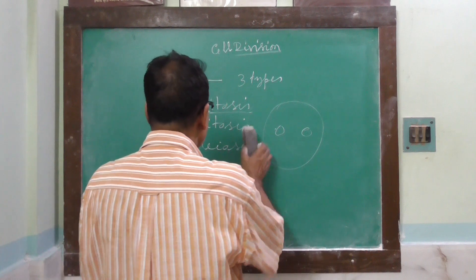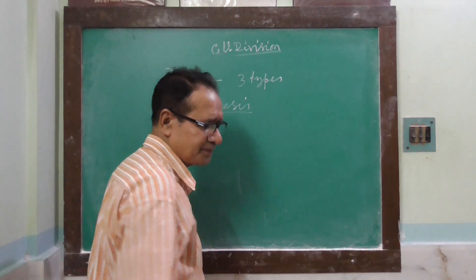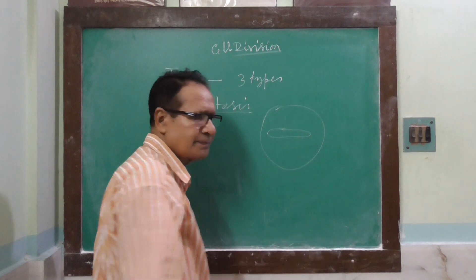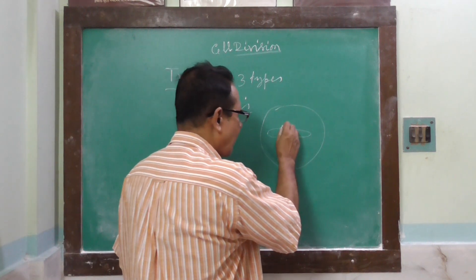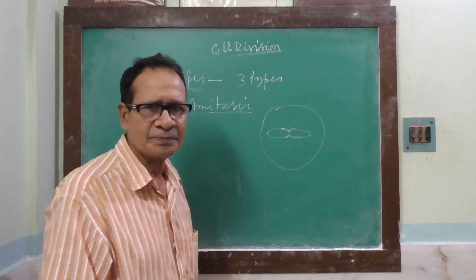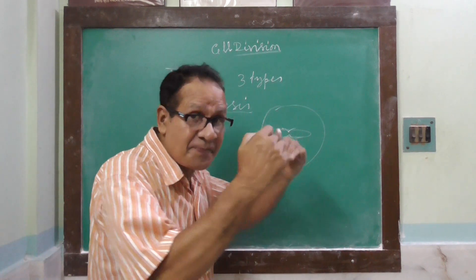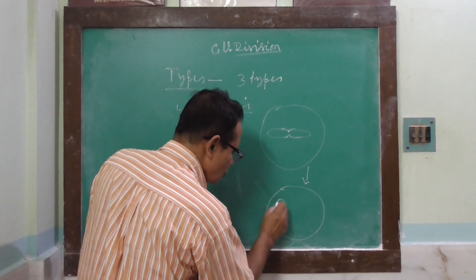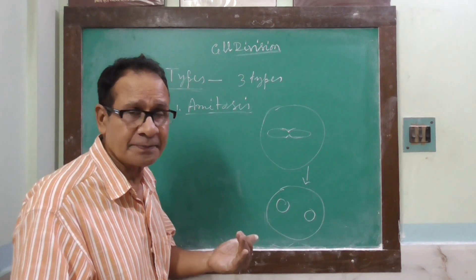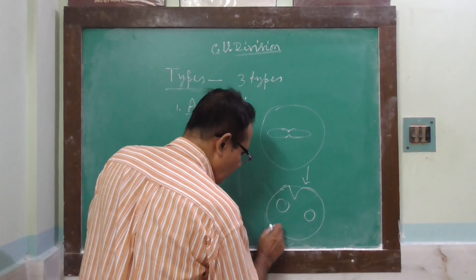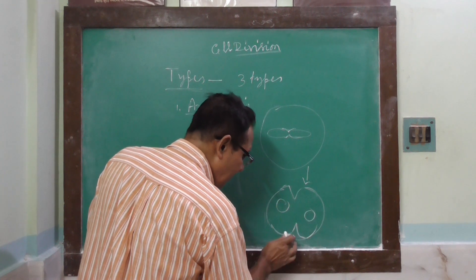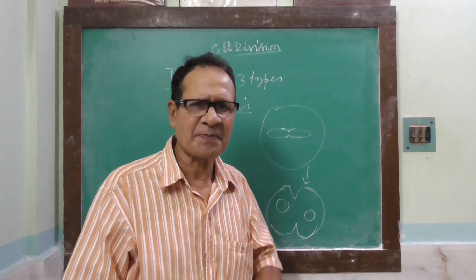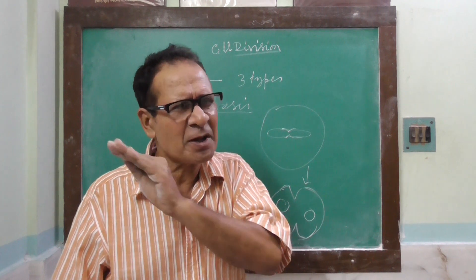What happens during amitosis? Inside the cell, at first the nucleoid elongates. A constriction appears in the middle, gradually deepens, and ultimately divides into two nucleoids. Cytoplasm also divides along with the division of the nucleus. Thus, two daughter cells are formed. It is a very simple and very fast process.